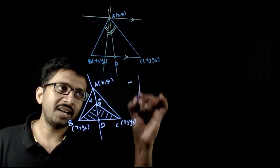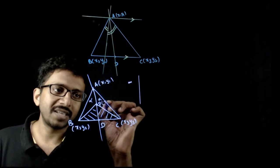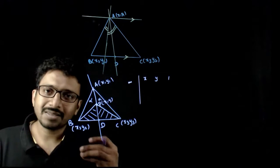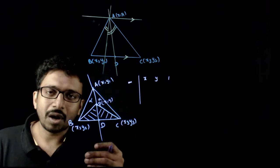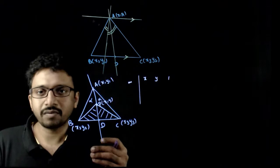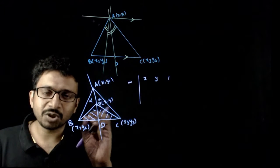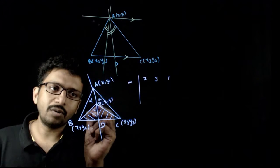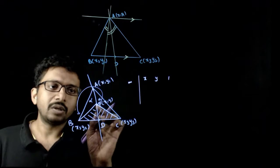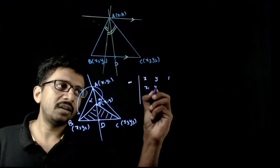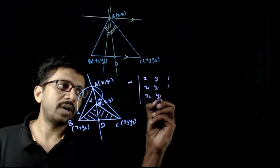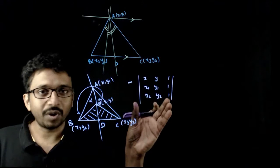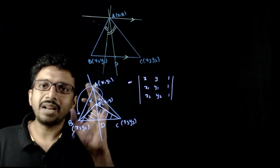Now, what is the formula for the area of a triangle using determinants? It is the determinant with rows (x, y, 1), (x1, y1, 1), (x2, y2, 1). This number might be either positive or negative depending on the direction. If you go counterclockwise, you get a certain sign; clockwise gives the opposite. This represents the area of the triangle.